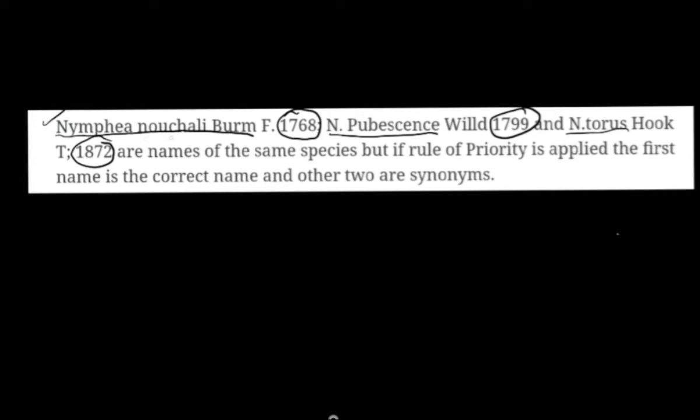Remember that Burm.f. is an author name, and similarly Willd. is an author name, Hook. is an author name. According to the principle of priority, this name would be given priority over all the other names, and these two names would be considered as synonyms.